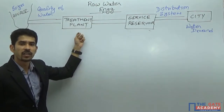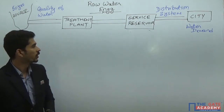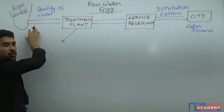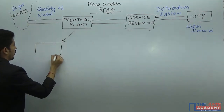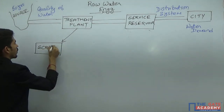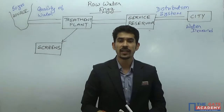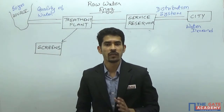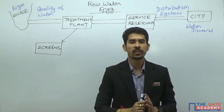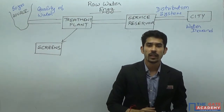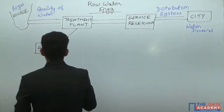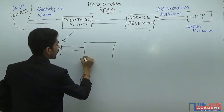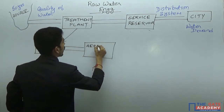This treatment plant consists of various units. The very first unit in the treatment plant will be screens. In screens, I am taking the raw water and bringing it to the screens. The function of screens is to remove the heavier suspended impurities present in your raw water. The water is then passed on to the next treatment unit, which is the aeration tank.